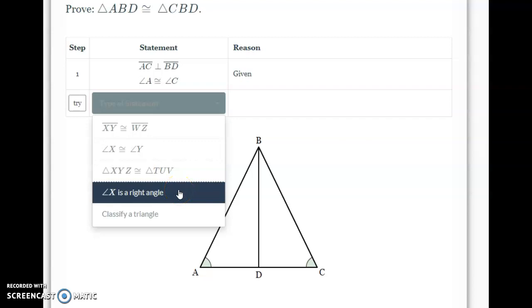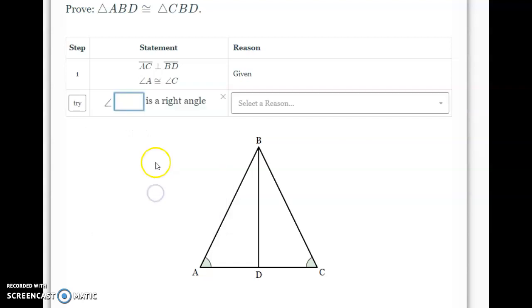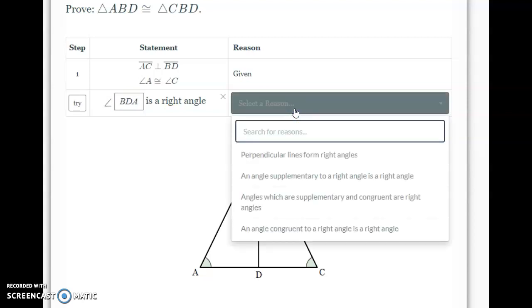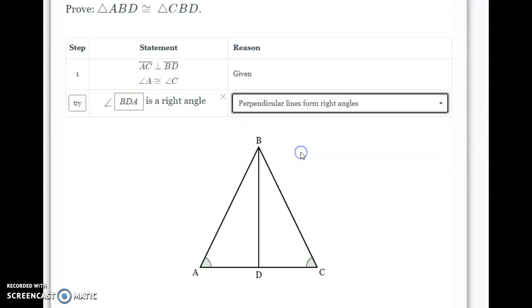You'll notice that in all of these drop-down menus, it says X, Y, and Z. Our diagram doesn't say that. The reason for that is, once I click on it, it gives me a blank to fill in myself. So, I'm going to say that angle BDA is a right angle, and the reason for that is because perpendicular lines form right angles.